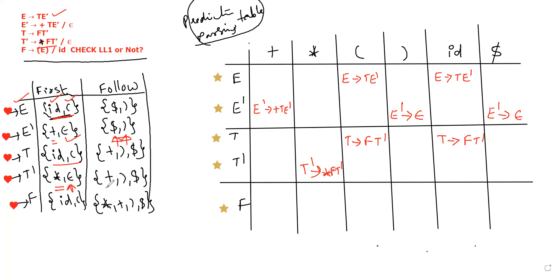Follow up in the second step: T-dash tends to epsilon. For plus, T-dash tends to epsilon. For close bracket, T-dash tends to epsilon. For dollar, T-dash tends to epsilon. So using the table, T-dash is the fourth base entry.